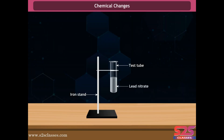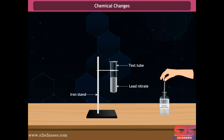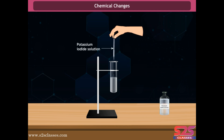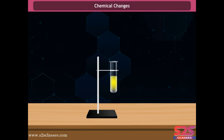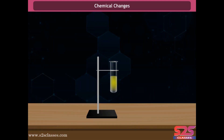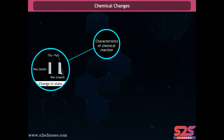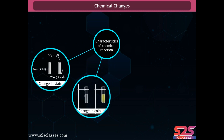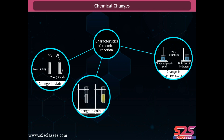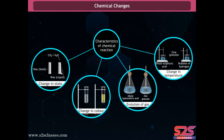Take lead nitrate solution in a test tube and add potassium iodide solution to it. You will observe that a yellow precipitate is formed. From these activities, we can say that a chemical reaction has taken place, as indicated by change in state, change in color, change in temperature, and evolution of gas.